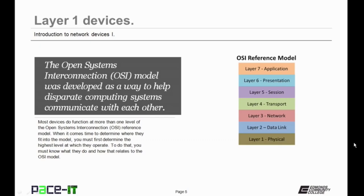We're going to be discussing the bottom three layers — Layers 1, 2, and 3 — today. Most devices do function at more than one layer of the OSI reference model. But when it comes to determining where they fit into the model, you must first determine the highest level at which they operate, because that's where they fit into the OSI model.